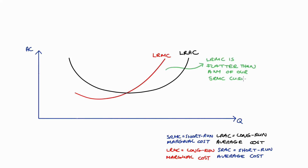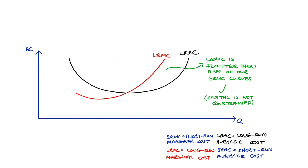There are two features of our long-run marginal cost curve I would like to point out. The first feature is that our long-run marginal cost curve is much flatter than our short-run marginal cost curves, which are pretty steep. This is because in the short run, the firm is constrained in its use of capital. In the long run, if the firm wants to produce one more unit of output, the firm is free to vary the amount of capital, labor, or any of its other inputs, and so they can choose the cheapest combination of inputs to get that additional quantity. In the short run, the firm doesn't have this freedom, so the long-run marginal cost curve increases at a slower rate and is thus flatter.